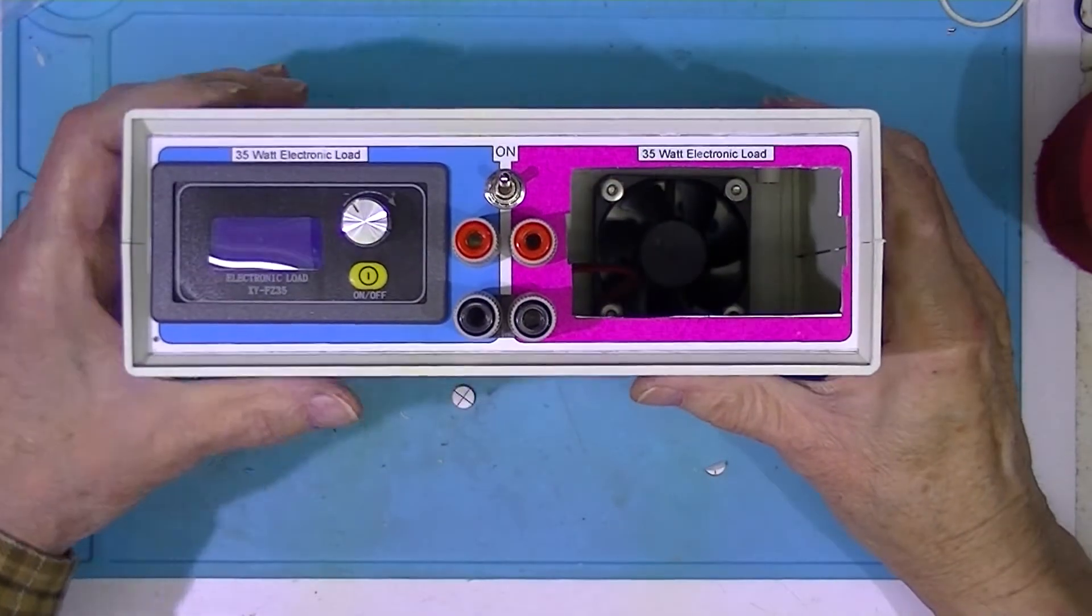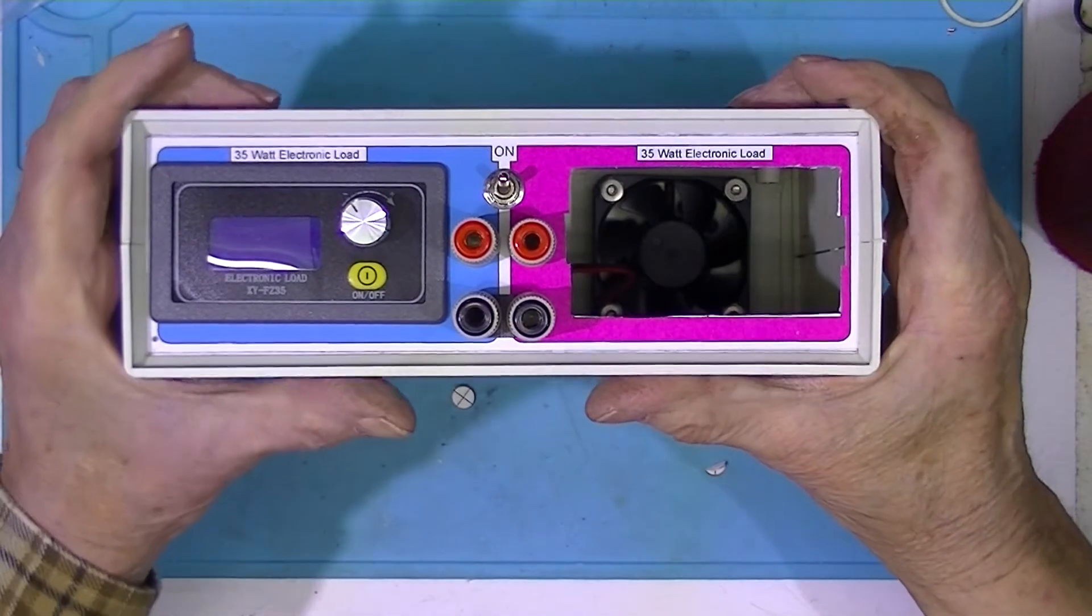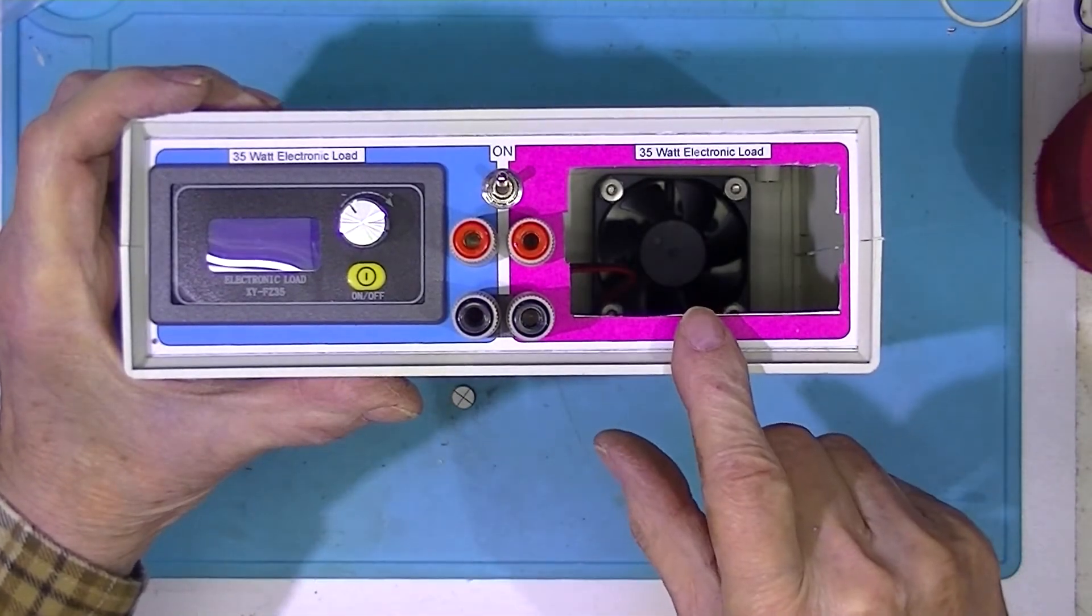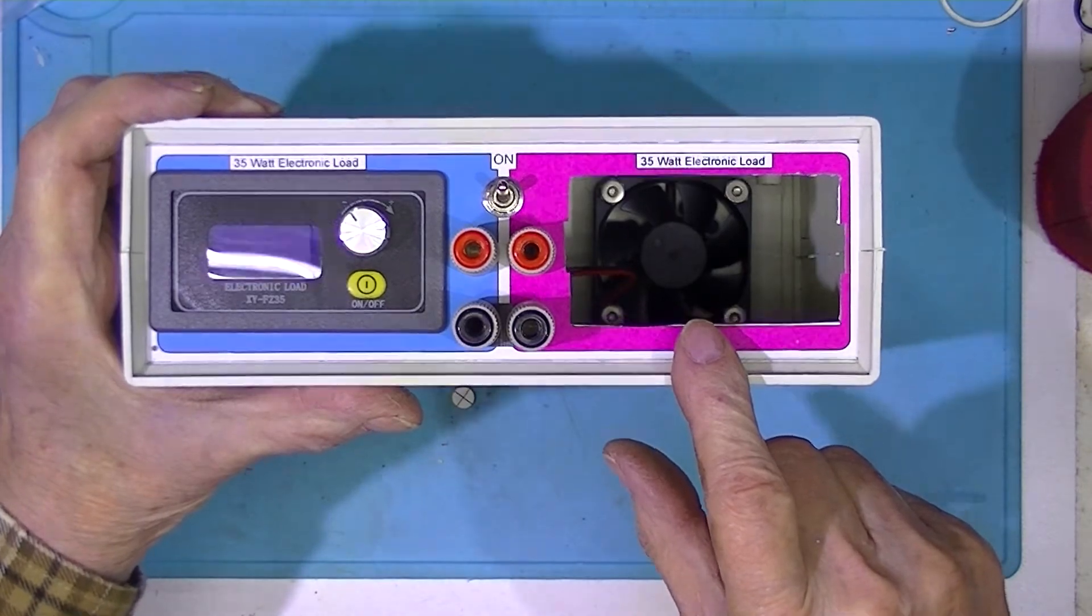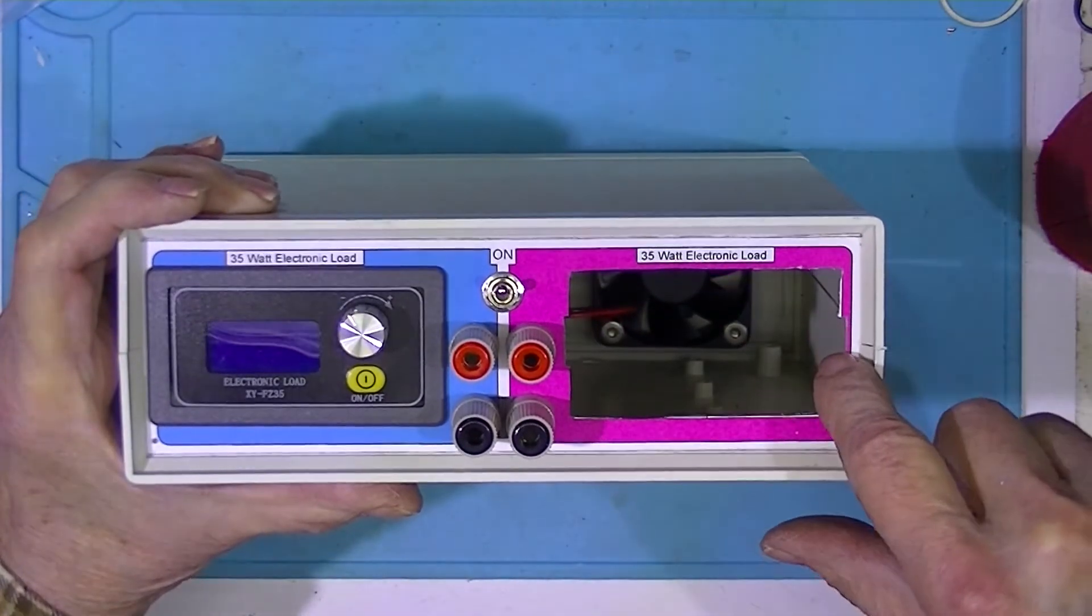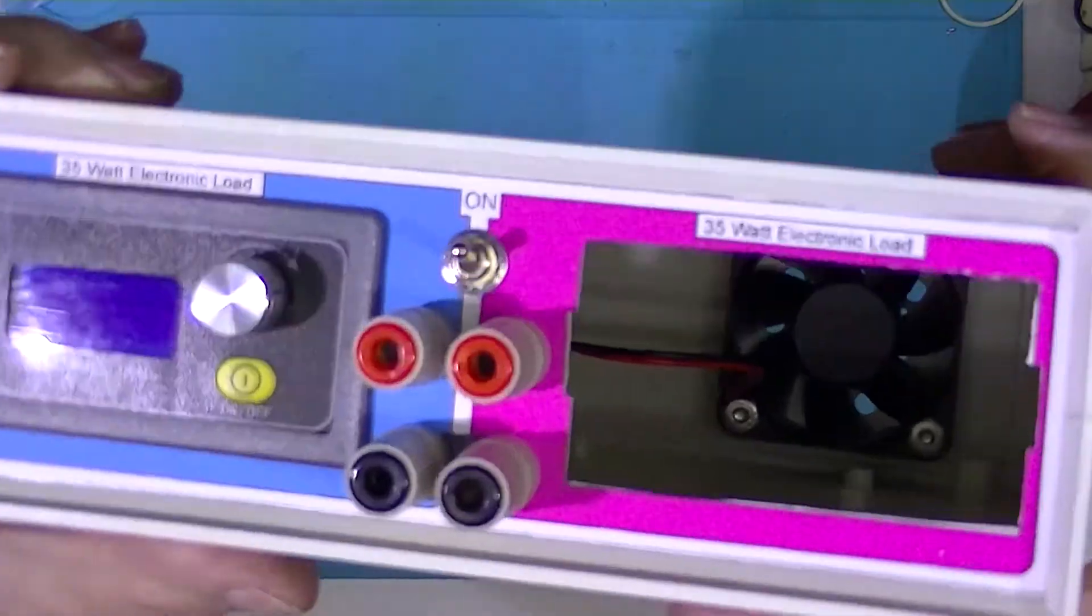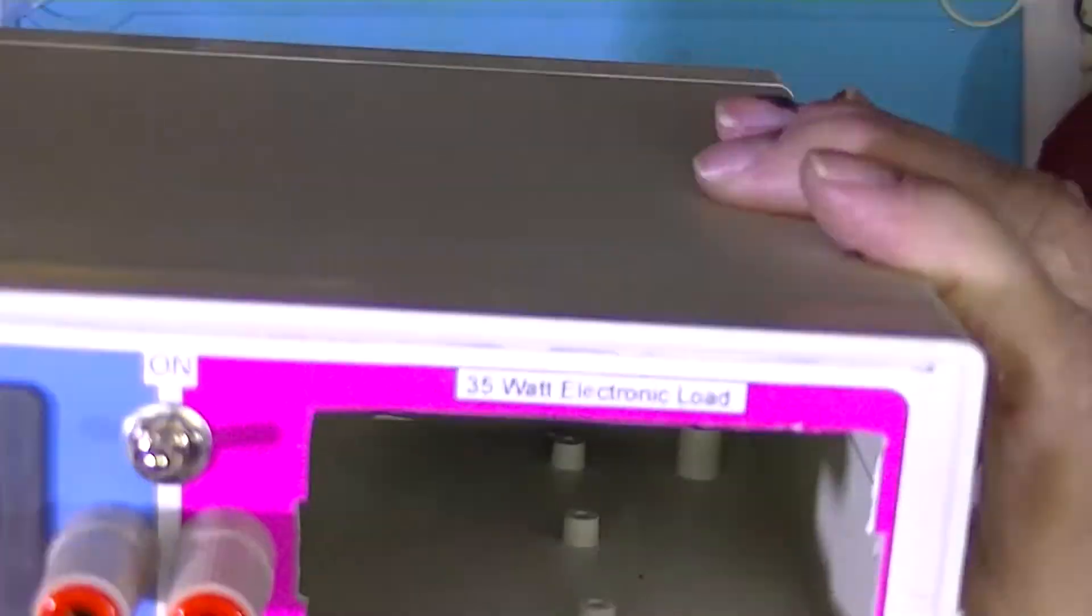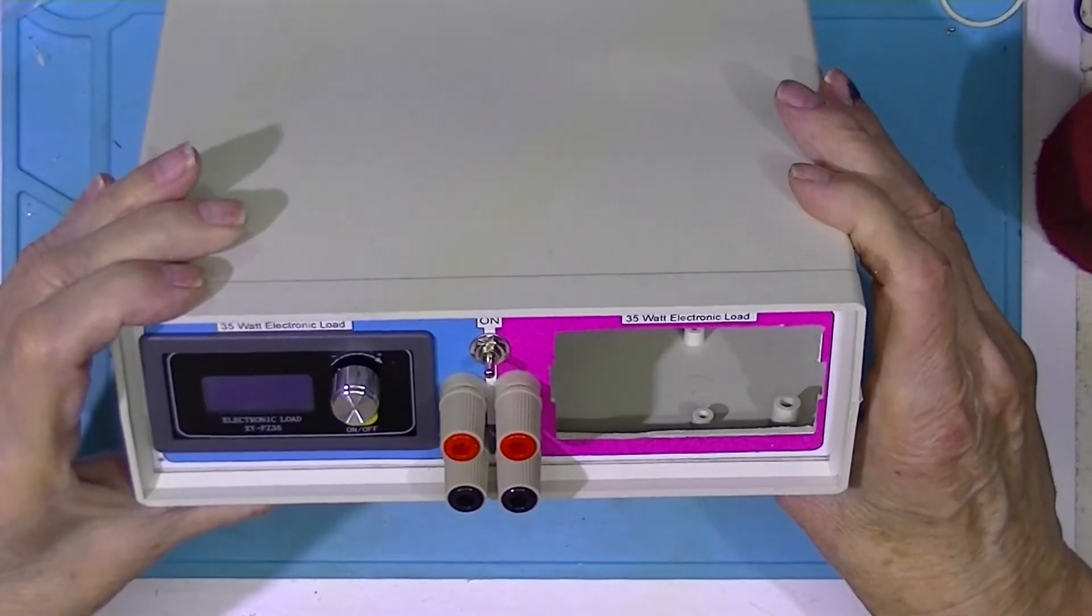This is the load—well, half the load. I can't seem to find my other 35 watt load. You can see the divots that I cut out on either end to allow for these locking lugs to pass through.